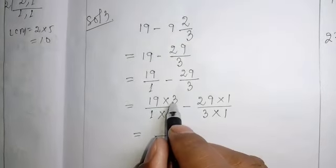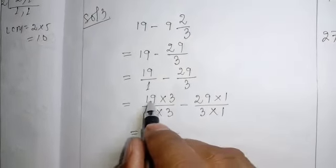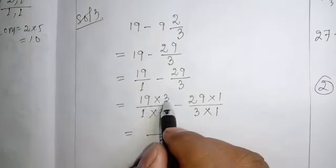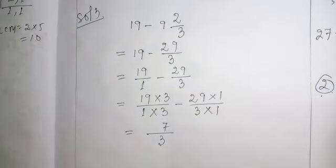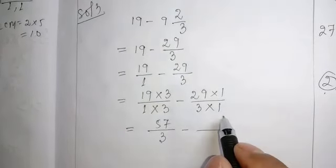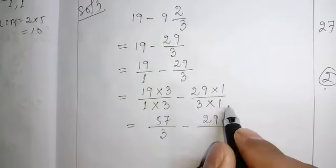3. 19 into 3. How much 3, 9 or 27? 2 in hand. 3, 1, 3, 4, 5. 5, 57 minus 29, 1 is 29, by 3, 1 is 3.